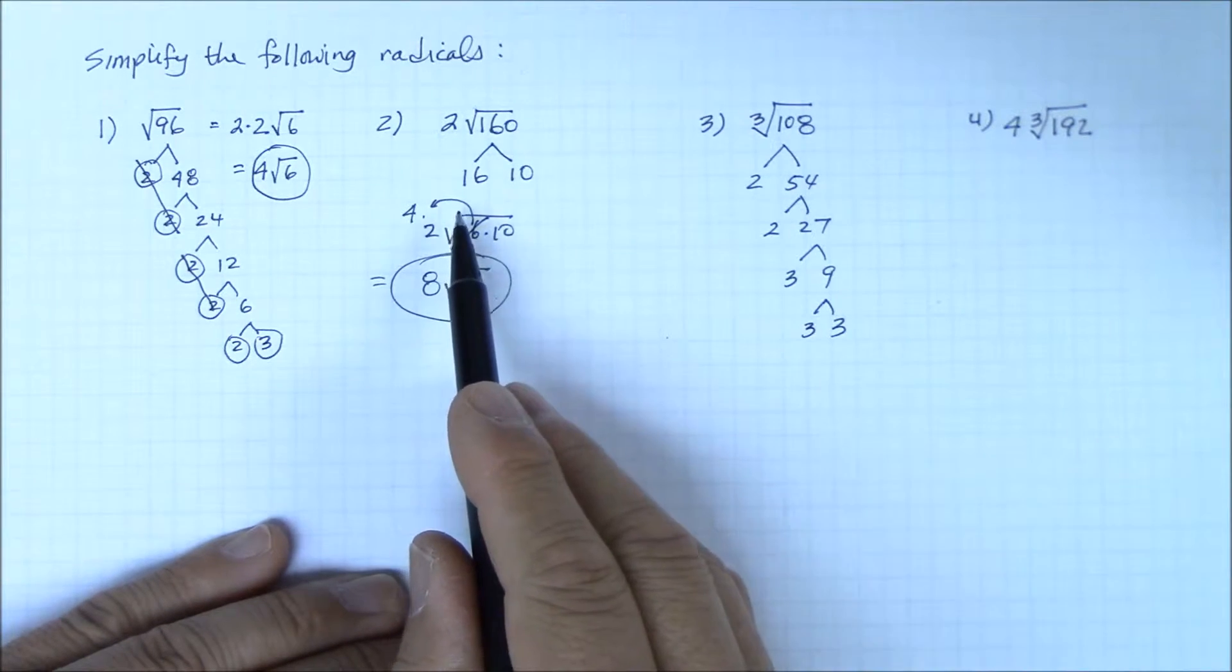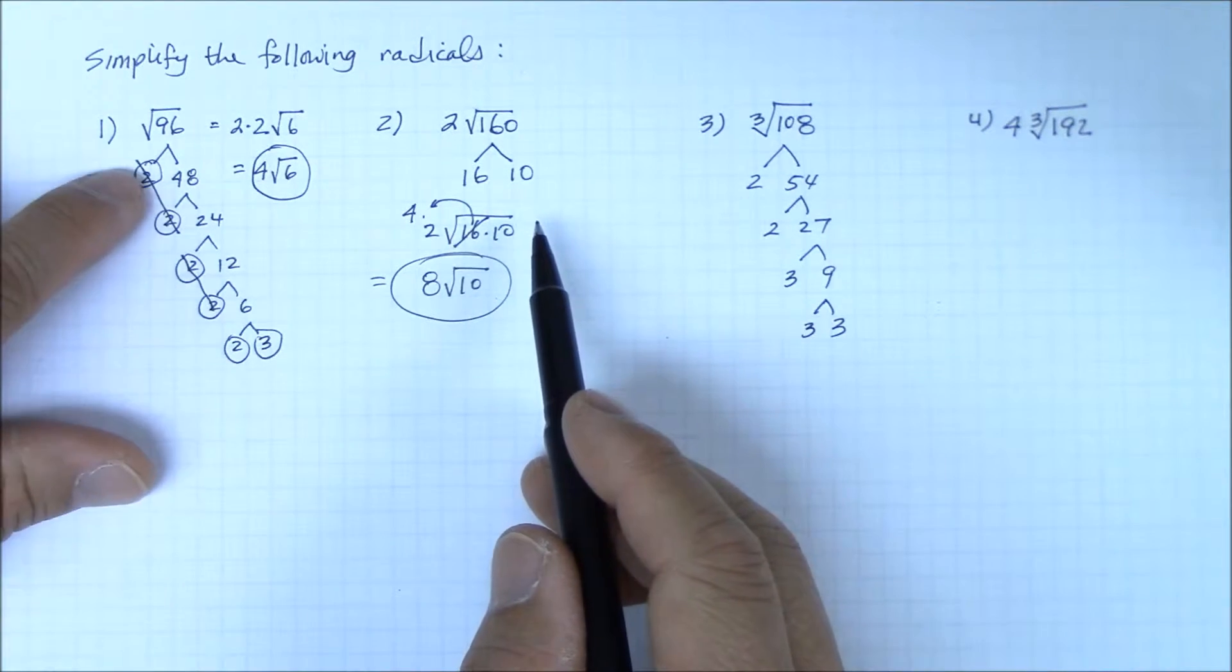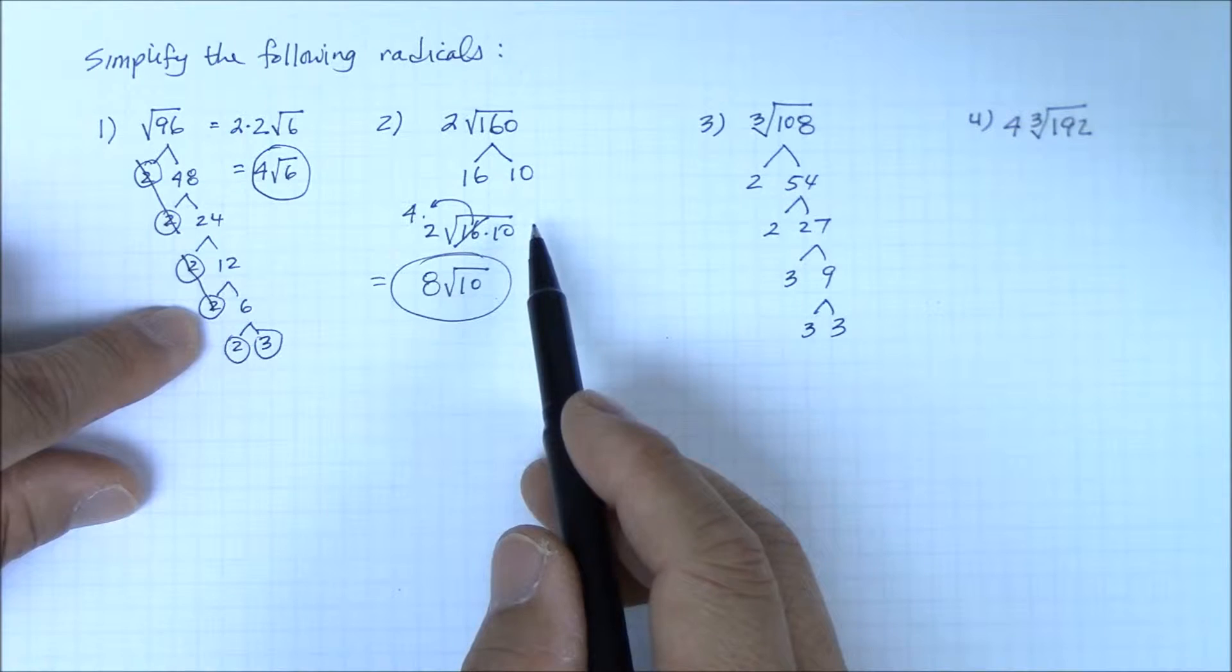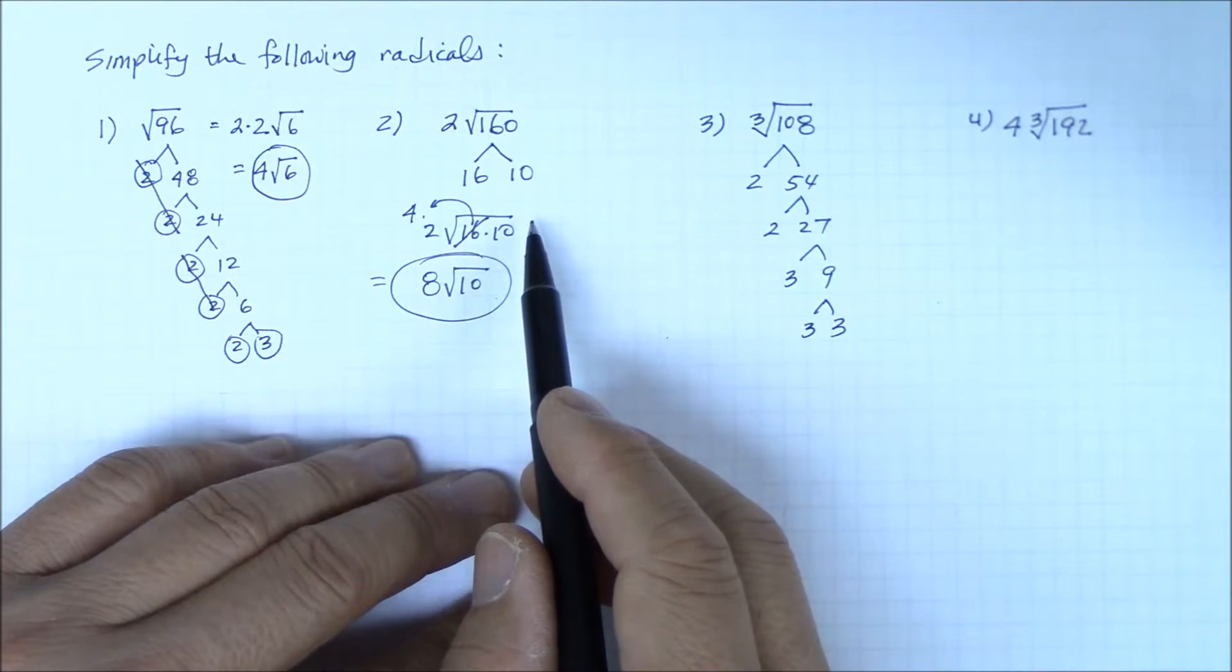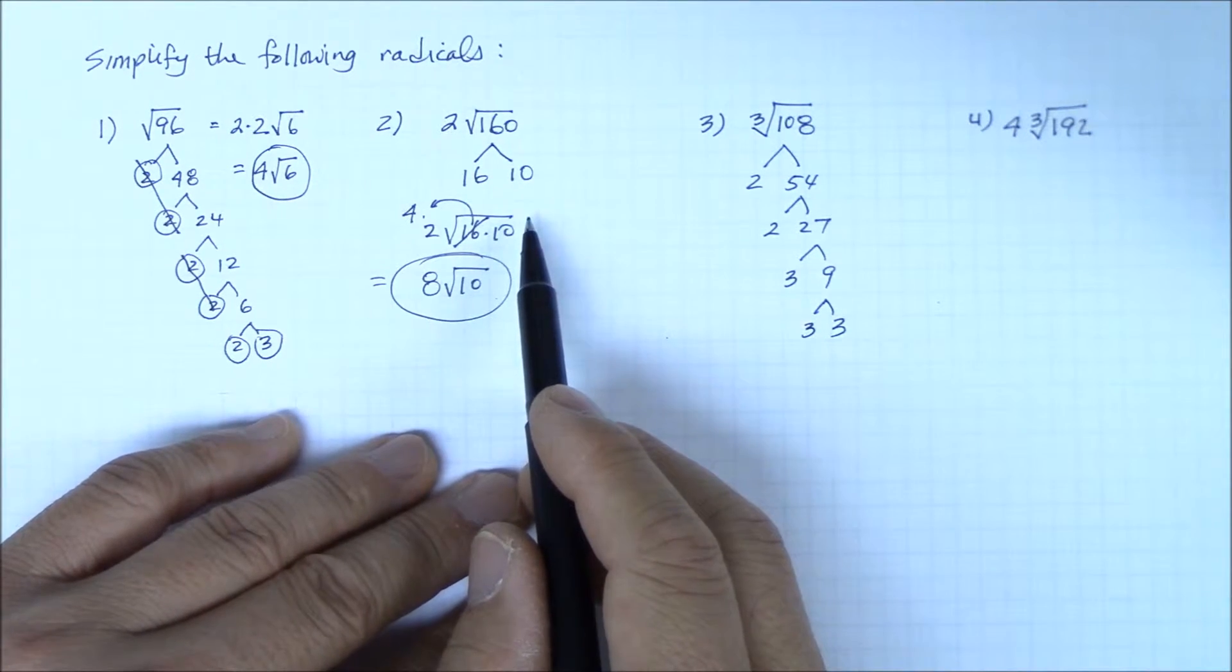Now, unlike the square root where you had to identify two identical numbers or a perfect square, now we're looking for a perfect triplet—three identical numbers.